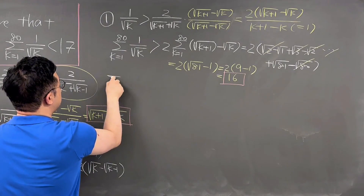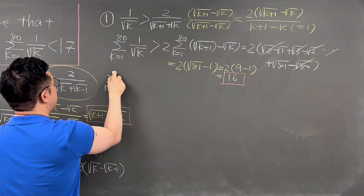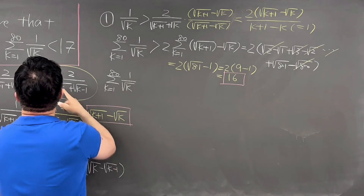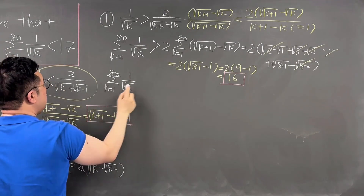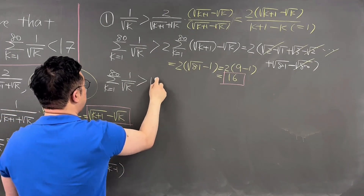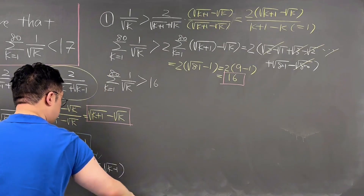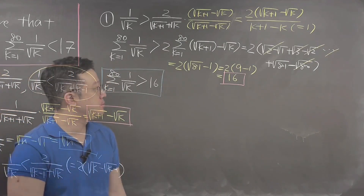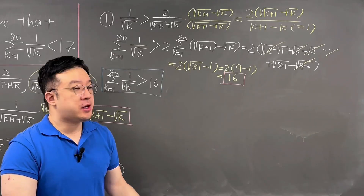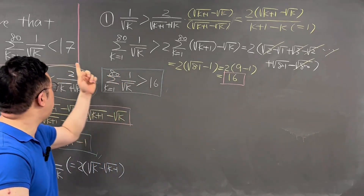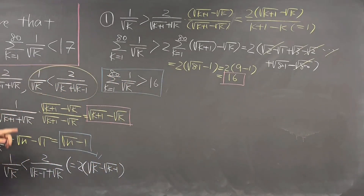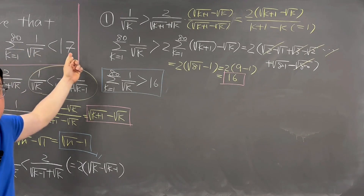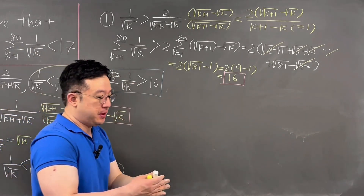So the lower bound part is proved: the summation from k=1 to 80 of 1 over square root of k is greater than 16. Now we can move on to the second part — the upper bound part — proving the summation from k=1 to 80 of 1 over square root of k is less than 17.